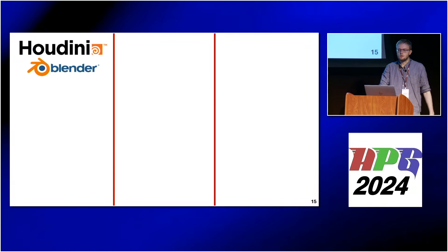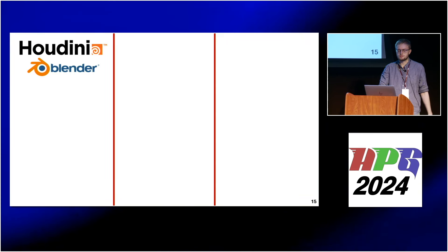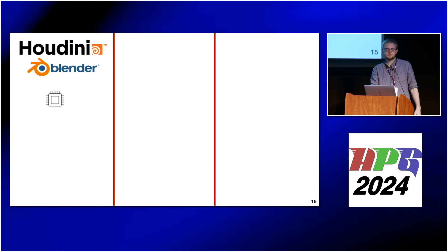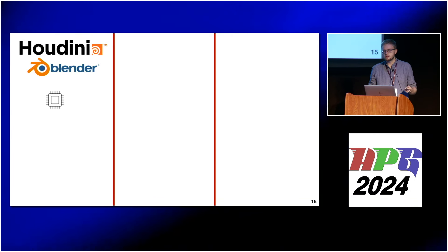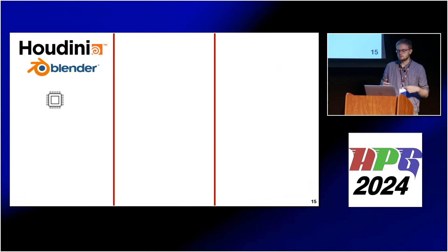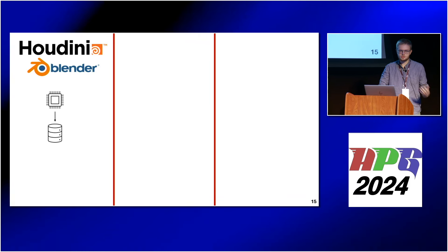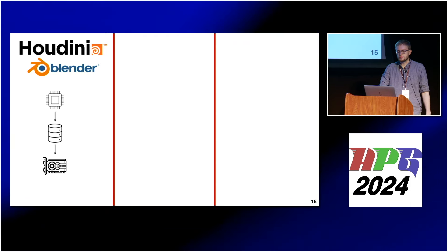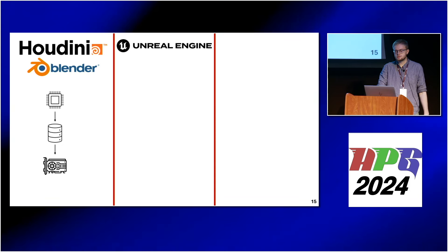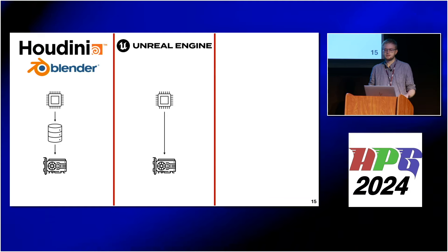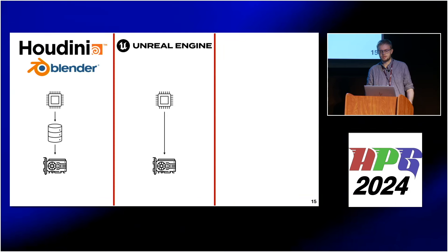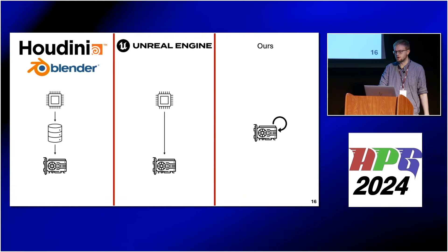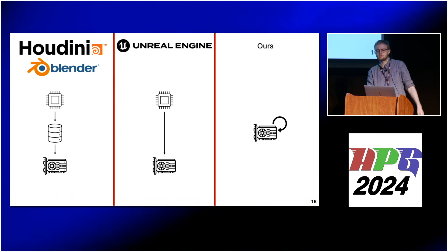Let's take a look at where these software systems generate geometry. For Houdini and Blender, if you want to use the generated geometry for real-time rendering, you basically generate it on the CPU, then store it to disk in some polygon format — you bake it — and then load it later for rendering. Unreal Engine achieves generation in-engine, skipping the baking to disk. What we want to do today is skip the CPU part entirely and let the GPU generate everything that it also renders.